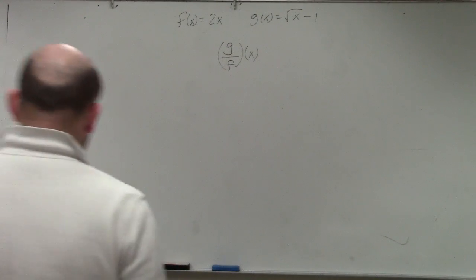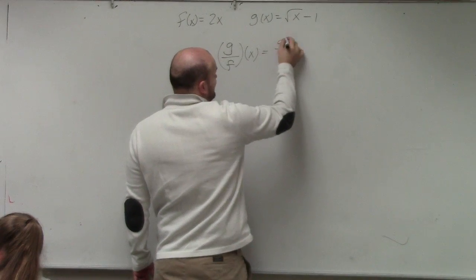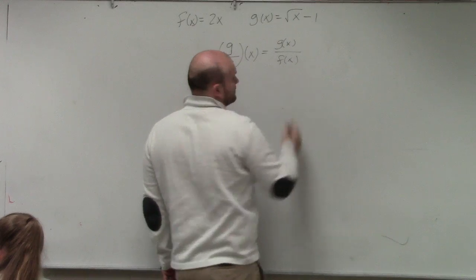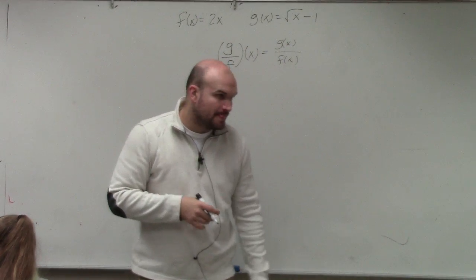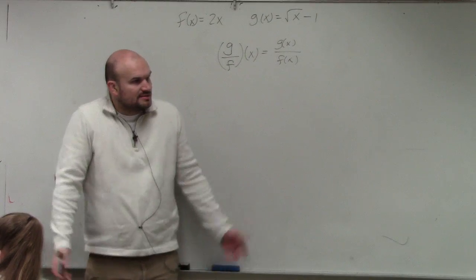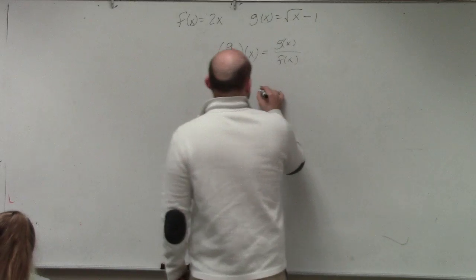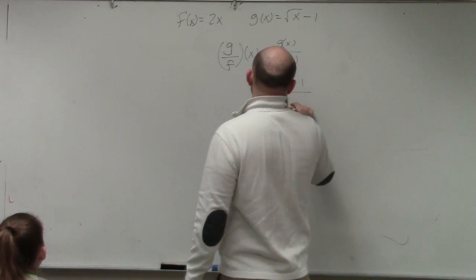One function divided by the other function. You guys remember, if you have your notation written down, this just means g of x divided by f of x. This is number 12. All you got to do is take one function and put it over the other function. So we know what g of x is, which is square root of x minus 1, and f of x is 2x.